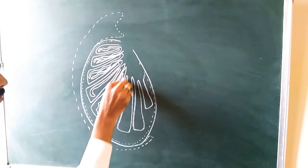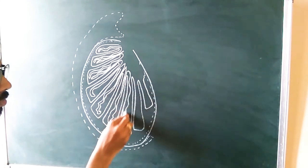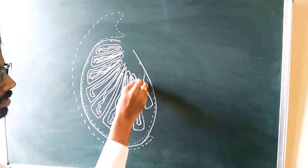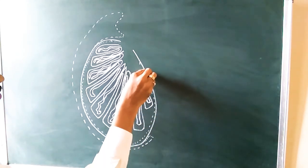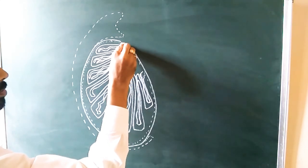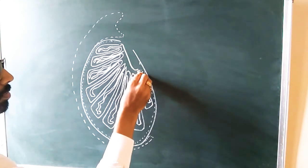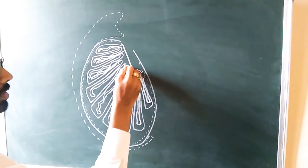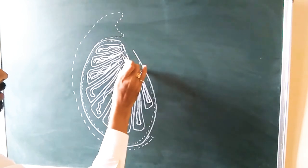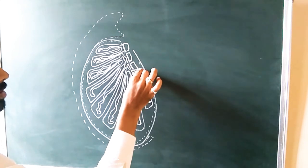These are the seminiferous tubules. After drawing the seminiferous tubules, you can continue the diagram. These seminiferous tubules are connected to a duct-like structure. These duct-like structures fuse together and form a network — a network of tube-like structures.